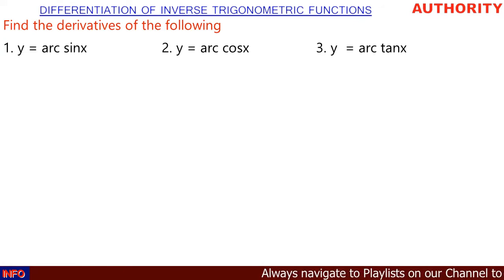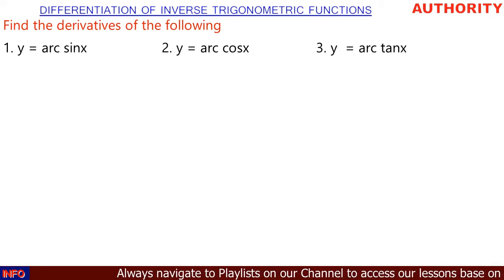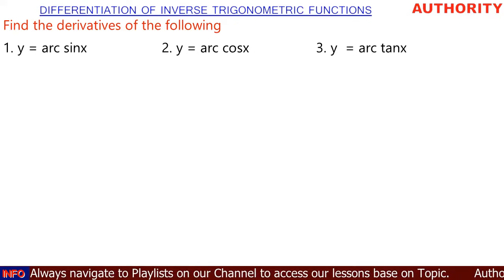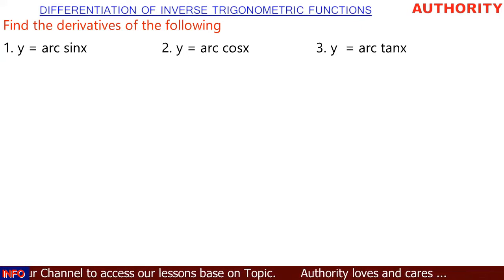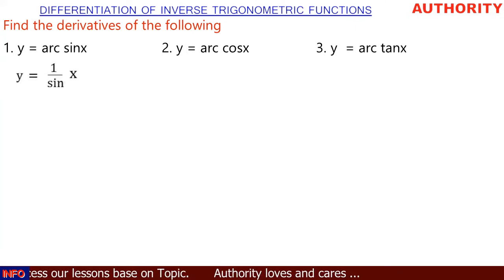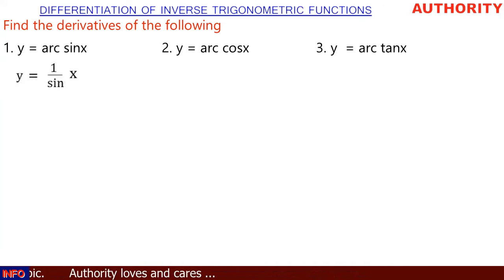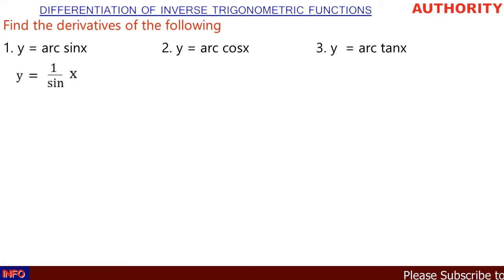Starting with the first question: y equals arcsin(x). When we talk about arcsin(x), it is an inverse, so we can write arcsin as one over sin(x). That means y equals one over sin(x), because one over sin is actually the inverse of sine.